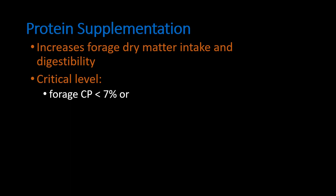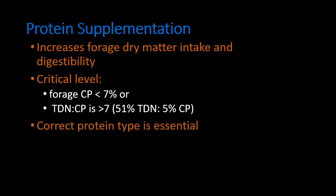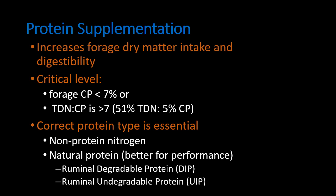Increasing forage dry matter intake and digestibility through protein supplementation is helpful, especially when feeding low-quality forages. Protein supplementation increases forage dry matter intake and digestibility; supplemental protein provides rumen microbes with the needed nitrogen or peptides for growth and fiber digestion. Critical levels to consider when supplementing protein: if forage protein concentration is below 7%, the diet is considered low quality and protein supplementation is warranted. If the TDN:CP ratio is greater than 7, protein supplementation is needed, as the forage provides more energy than protein. The correct protein source — natural protein vs. NPN compounds — should also be considered relative to the animal's age and weight.